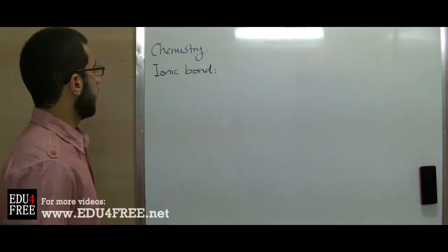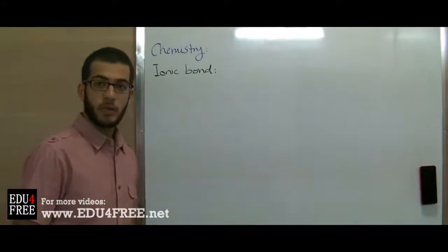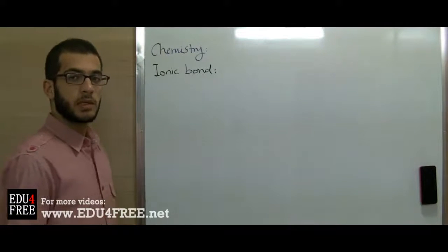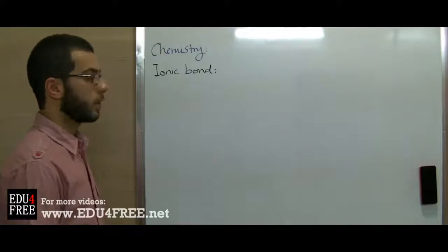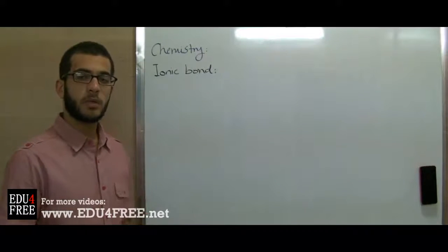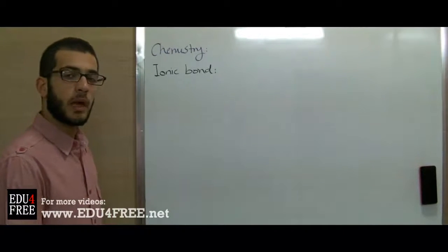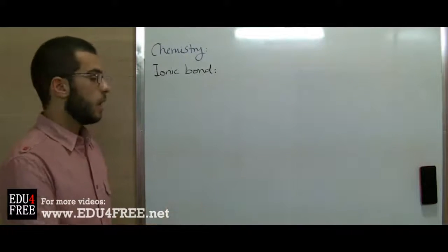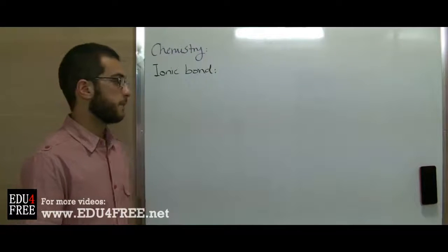The first thing we have to know about the ionic bond is that it occurs between metals and nonmetals. Accordingly, we can say that they always occur between the extremes of the periodic table, because metals are found on the left side and nonmetals are found on the right side of the periodic table, as we can see.